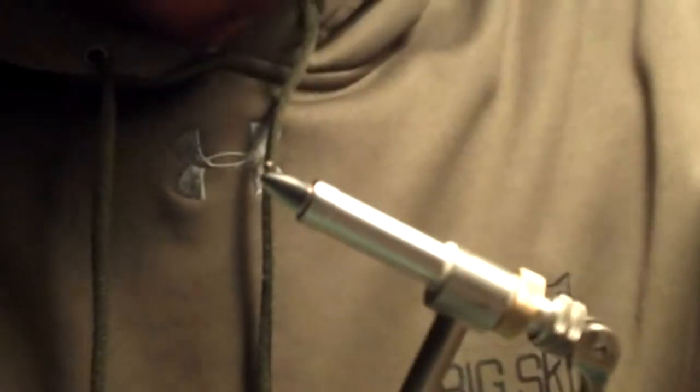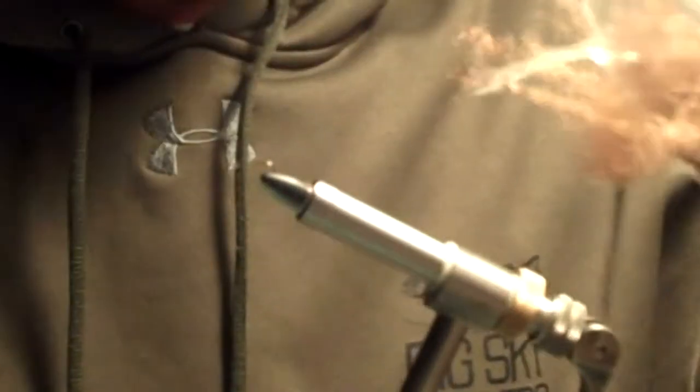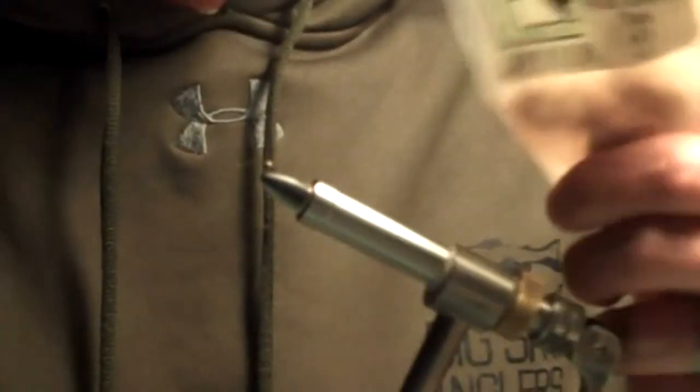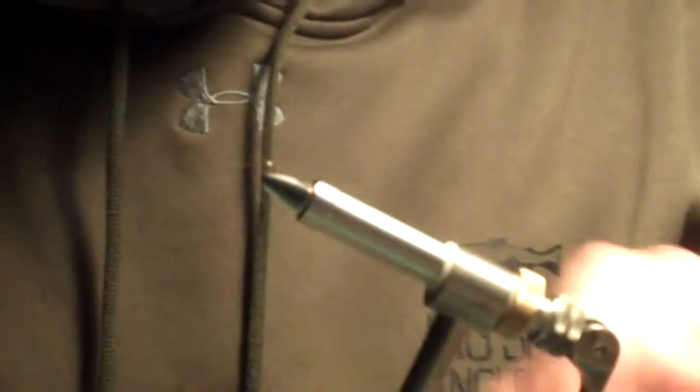This evening we're going to tie a size 16 tan X caddis. We're going to use a little brown zelon for the shuck, some hair zero dubbing, hair zero plus tan, and some elk hair. That's it.